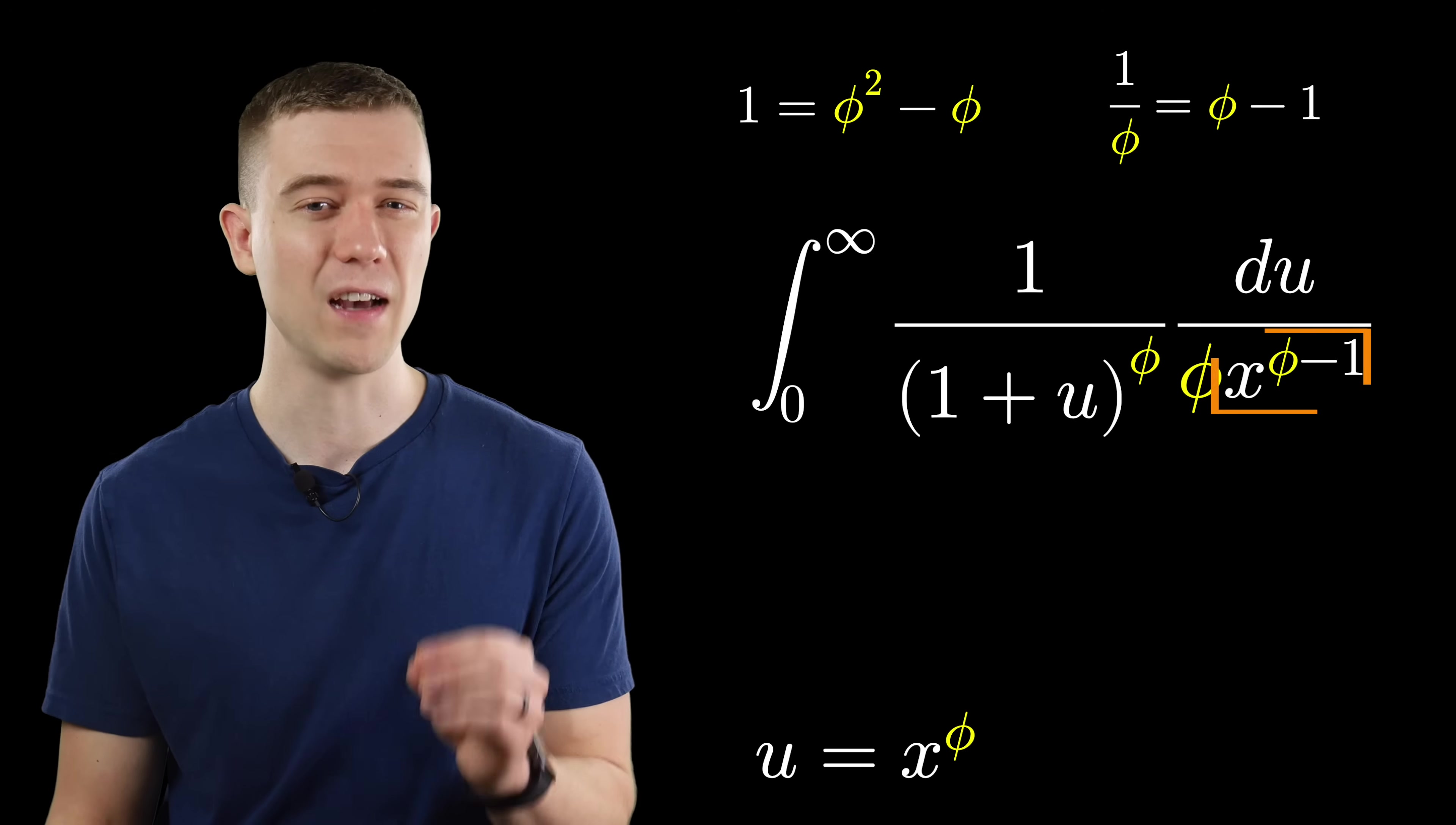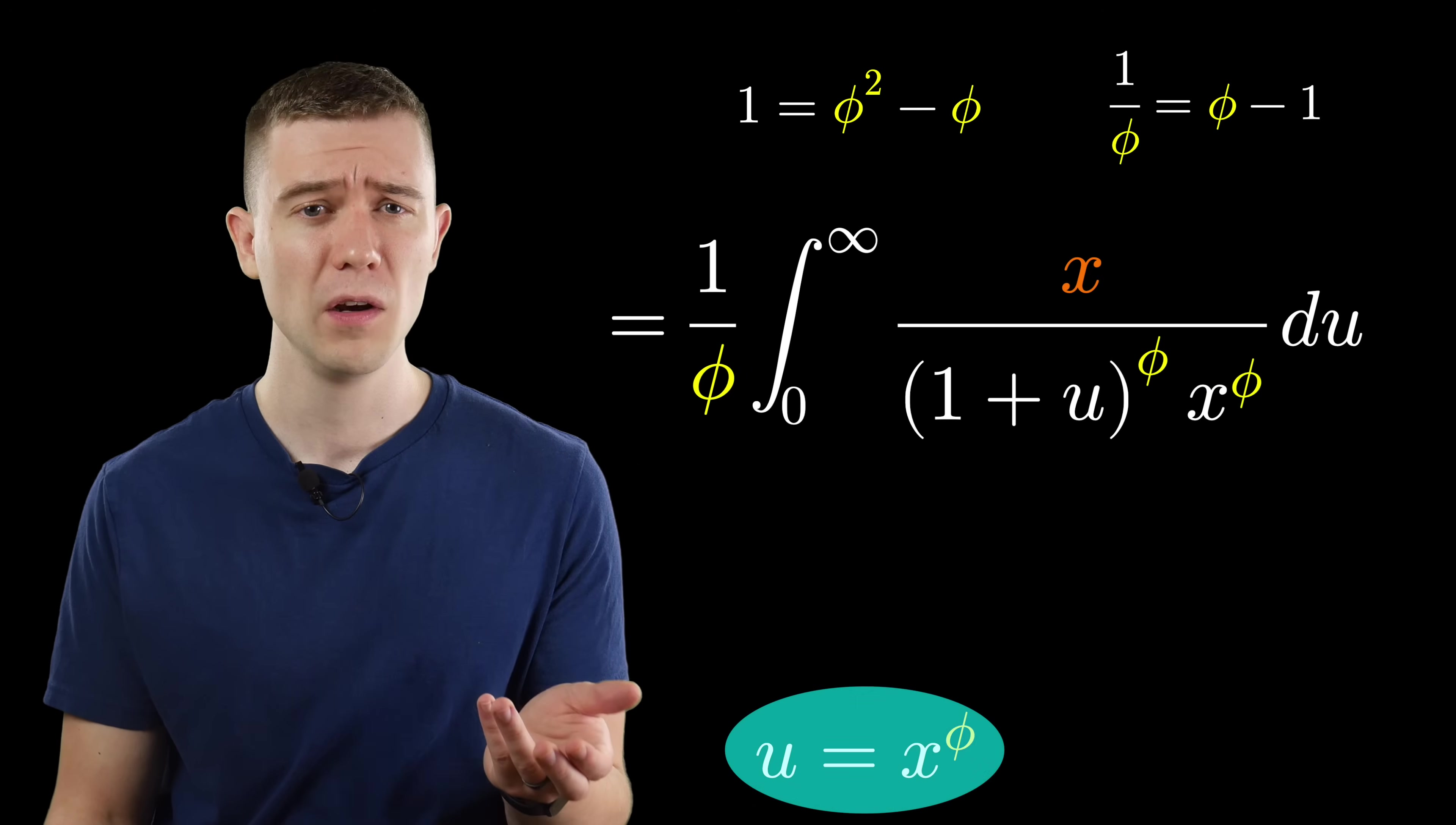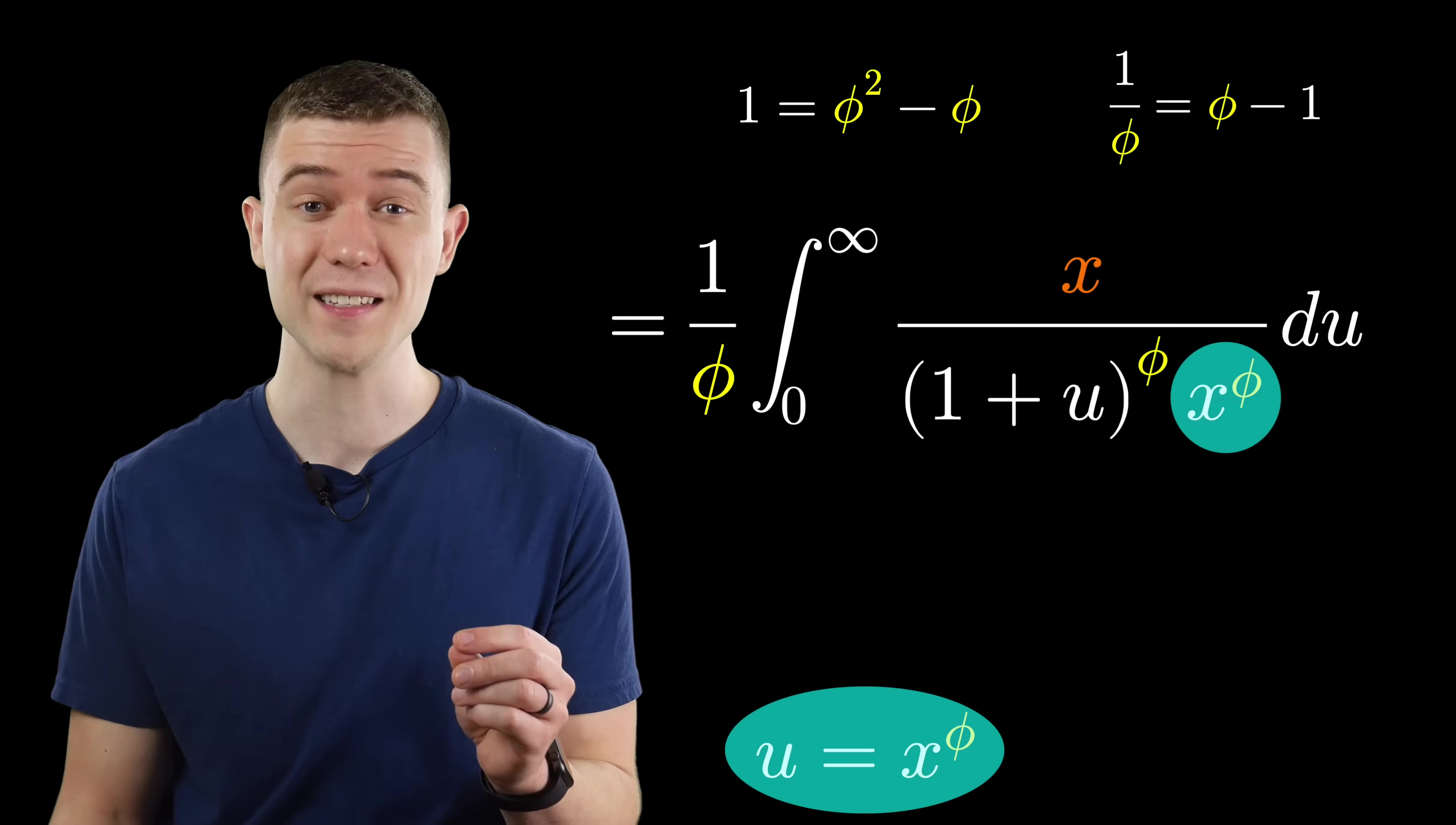To see what's going on, let's break that x up using properties of exponents. And looking back at our substitution, we know what x to the phi is. It's u.